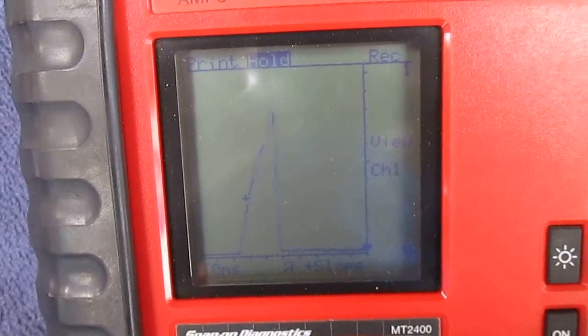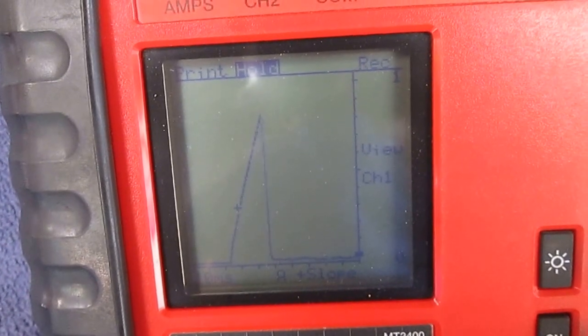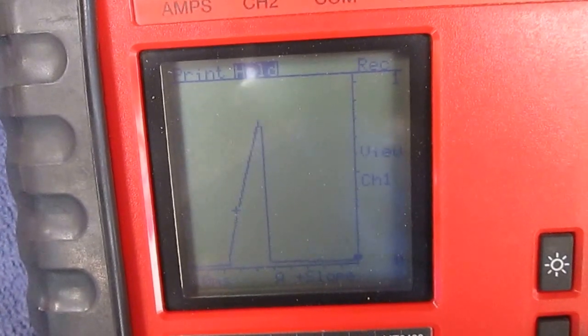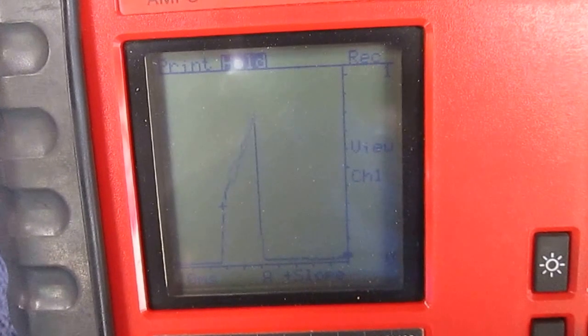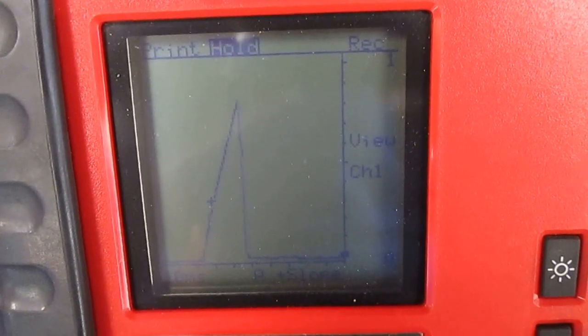As you can see, it's got a break up in that front line. What we have is the code P0306, a misfire on number 6 cylinder.